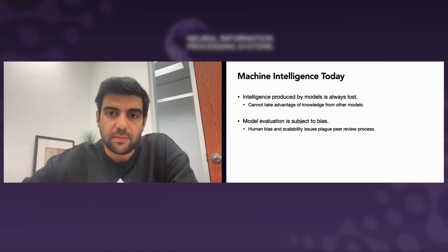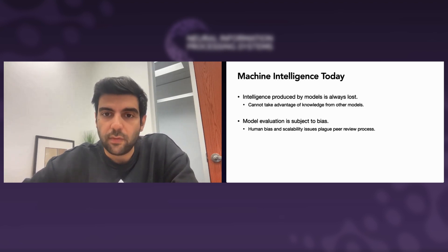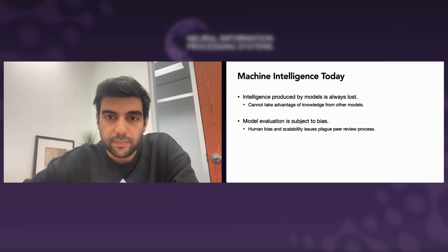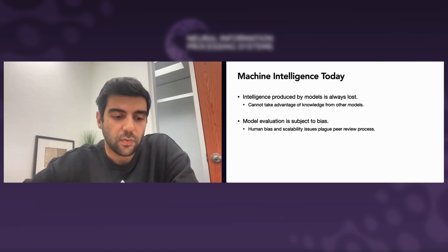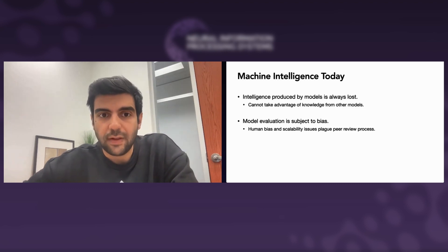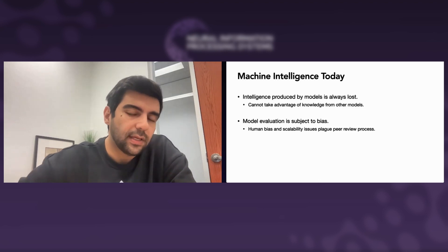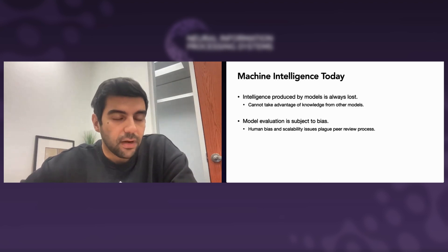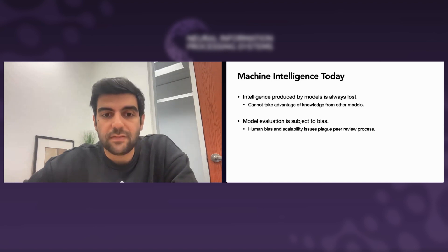Second, model evaluation is always subject to bias. This is a well-known issue within AI circles — it's notoriously difficult to replicate results, and the peer review process itself suffers from a lot of setbacks, including human bias. A better system should allow models to evaluate other models — intelligence evaluating intelligence. In this way, we remove human bias, and only a well-performing model, truly valuable to the collective as a whole, will be rewarded accordingly, removing preconceived notions about publications.